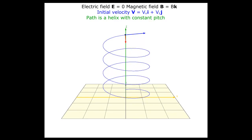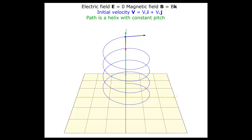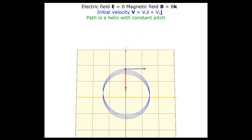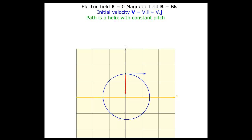The projection of the path in the x-y plane is a circle. This would have been the path if the z-component of velocity of the charged particle were zero.